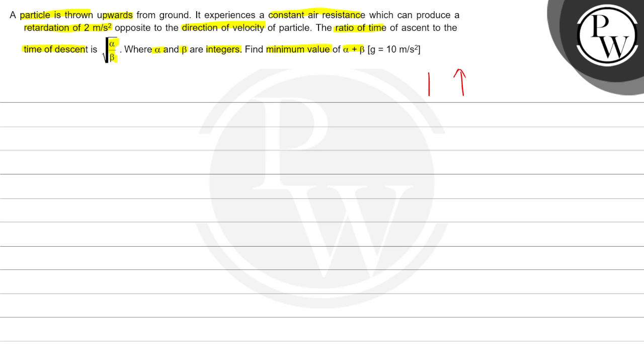Now, if the particle has been thrown in the upward direction, then the time of ascent is supposed to be Ta and the acceleration is g plus a, where a is air resistance. And when our particle goes up and then comes back down, the acceleration will become g minus a.